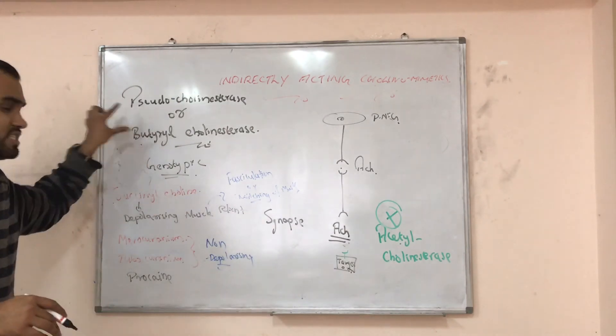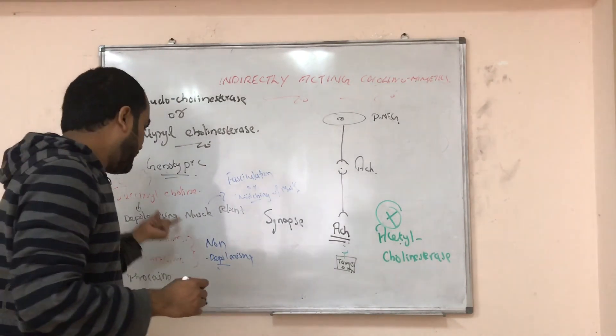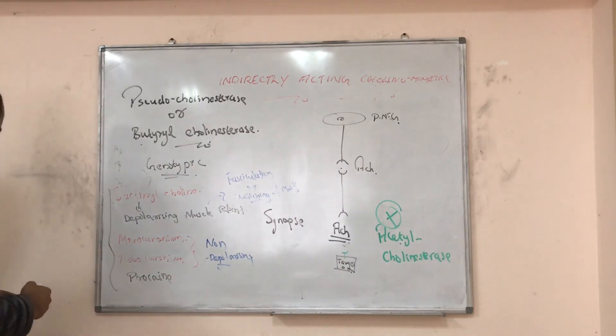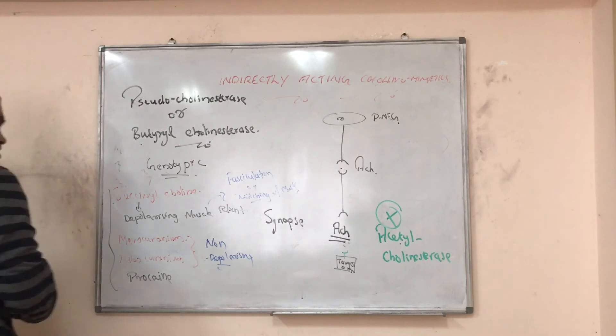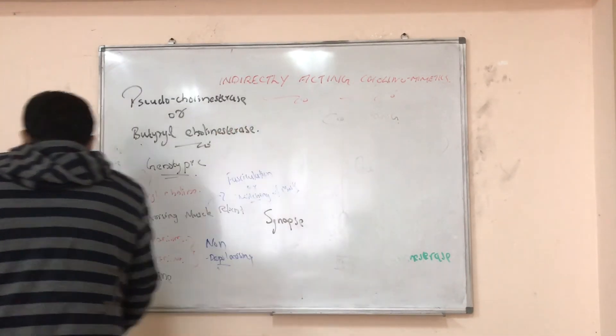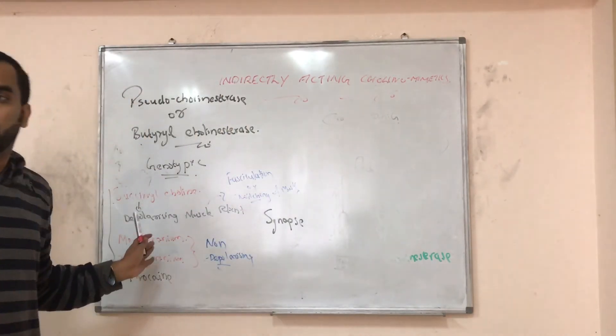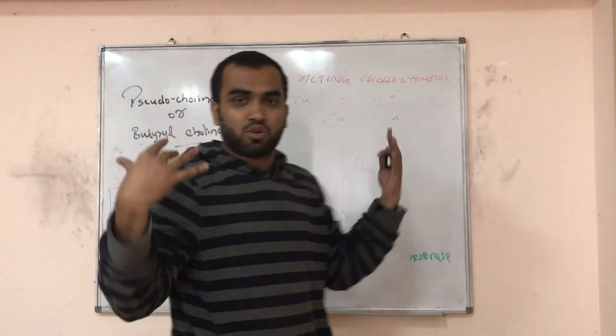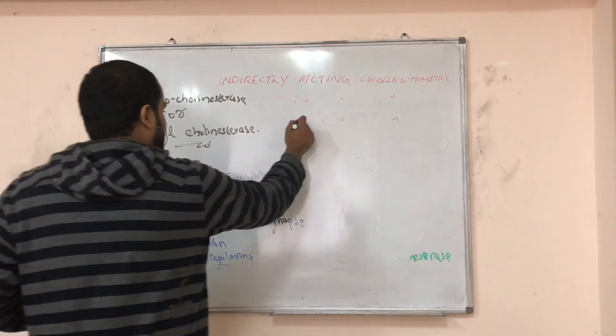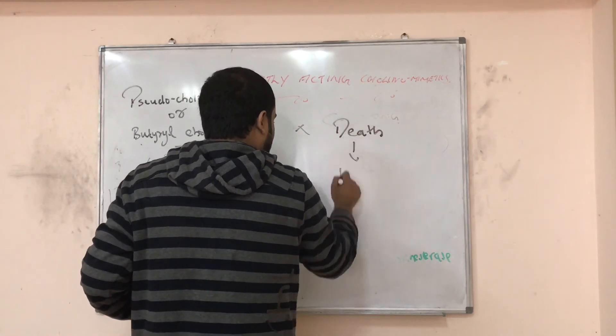But if the person doesn't have this enzyme, the butyrylcholinesterase, what happens? This will be given for anesthetic or for the procedure. The duration of action will increase. You know all our respiration is controlled by muscles. So this will increase the duration and that will lead to the relaxation of muscles. So the respiratory system, it can lead to death.